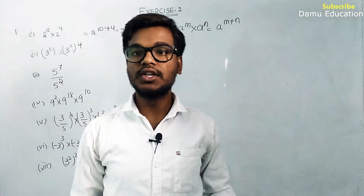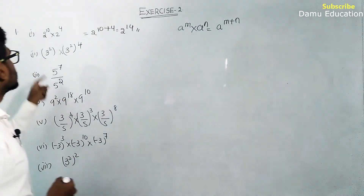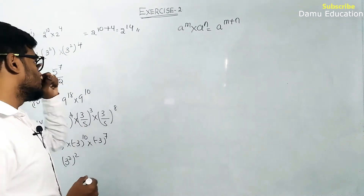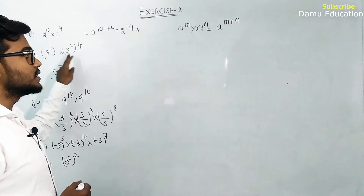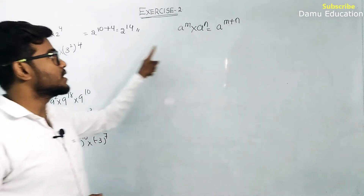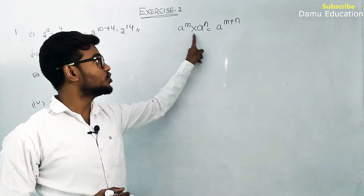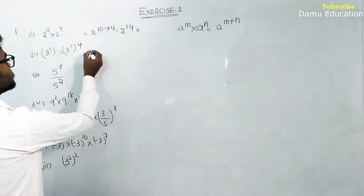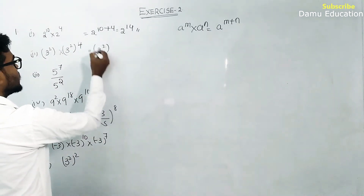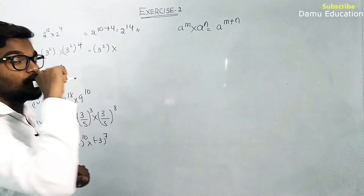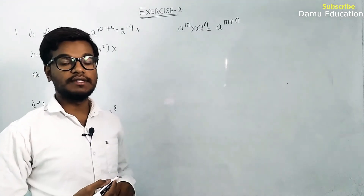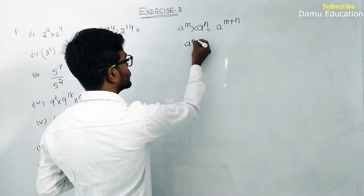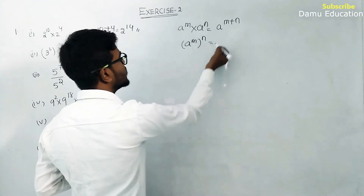Next: 3 square into 3 square, whole to the power 4. Bases are same, so we can apply a power m into a power n. But first we handle the bracket: a power m whole power n.